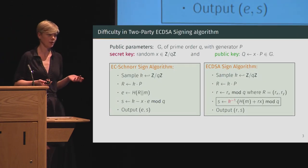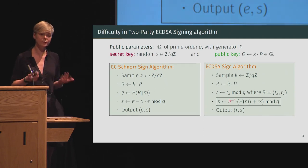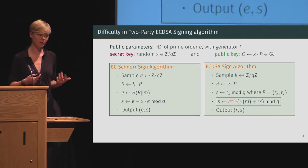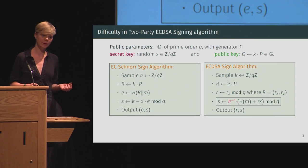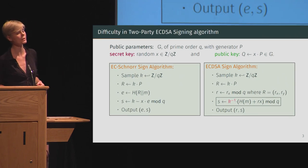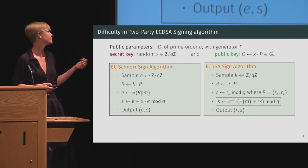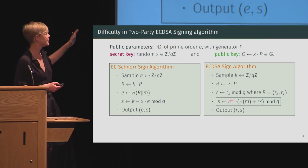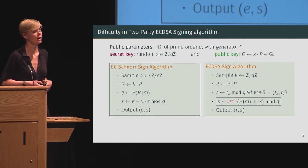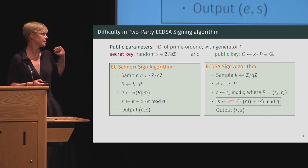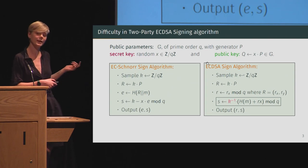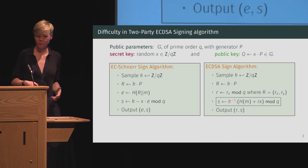Let me compare the Schnorr signing algorithm to the eCDSA signing algorithm. For both schemes, the public parameters are the group of points of an elliptic curve G of prime order Q generated by P. The secret key is a random X sampled from Z_Q and the public key is X times the generator P. In Schnorr, all steps are linear — the only nonlinear step is the hashing of the message, but since both parties know the message, that isn't a problem. However, in eCDSA, things are very similar up until we compute S, where we need to multiply by the inverse of K, and computing this inverse of K is what makes things really complicated.